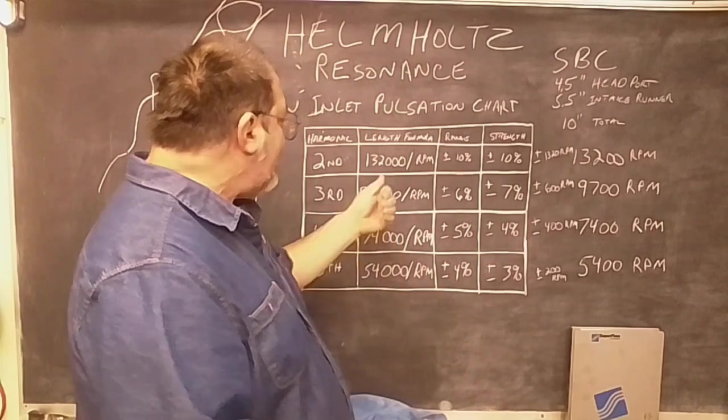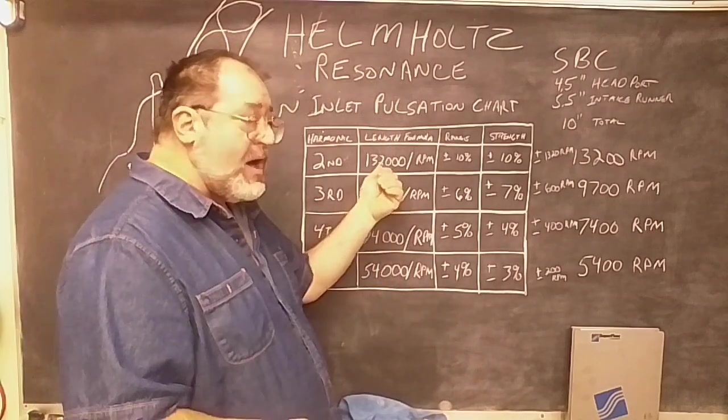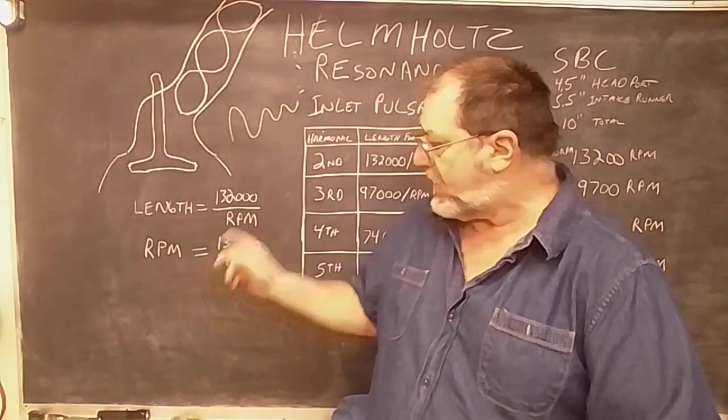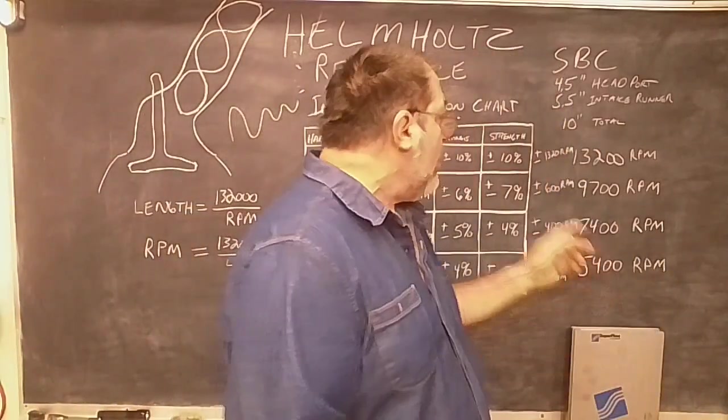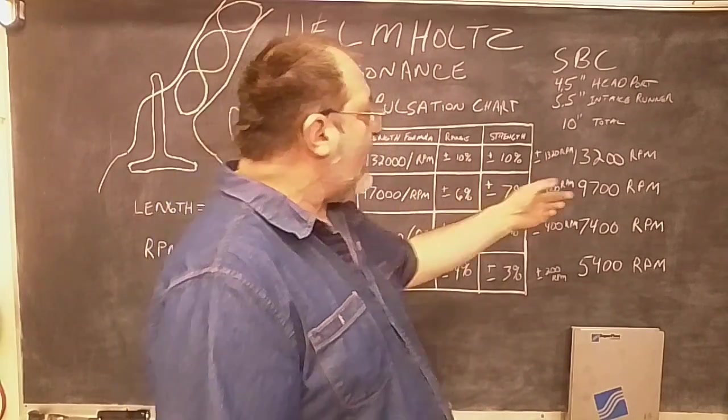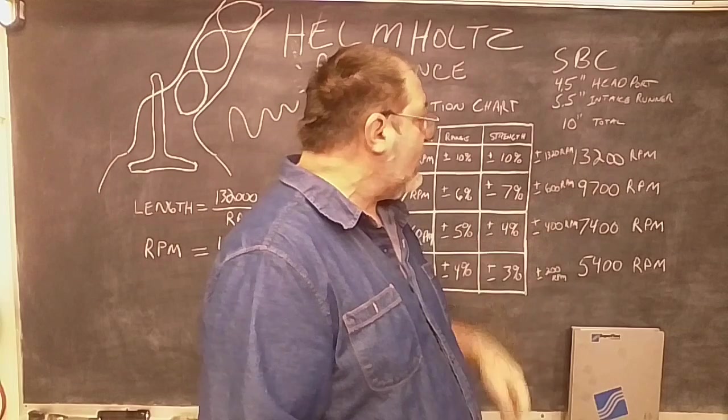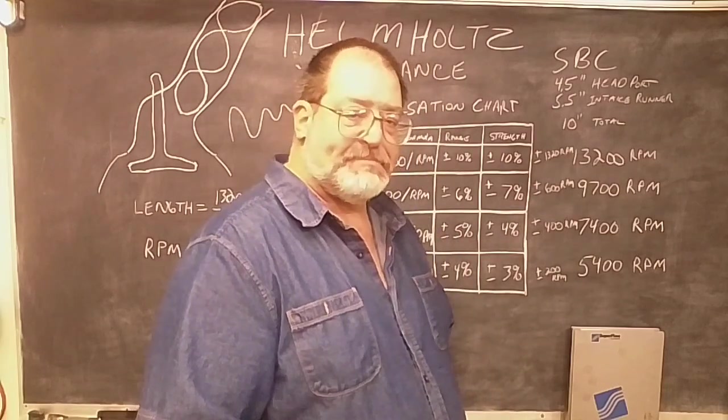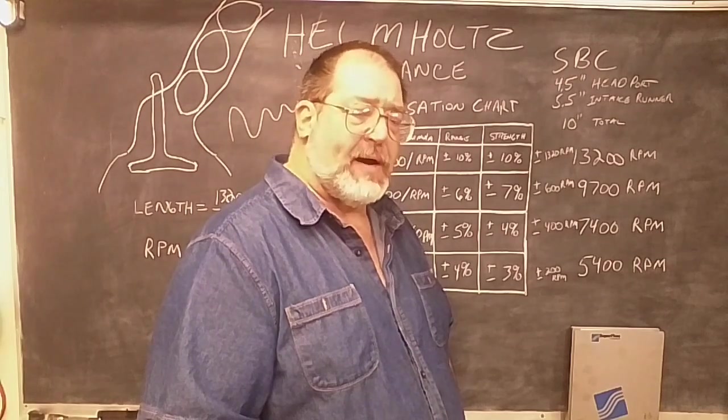So, if we take the harmonic and we figure out with ten inches, using the formula, we come out to using the second harmonic on a small block Chevy, it's going to work at 13,200 RPM. There's not a lot of motors that go that high.